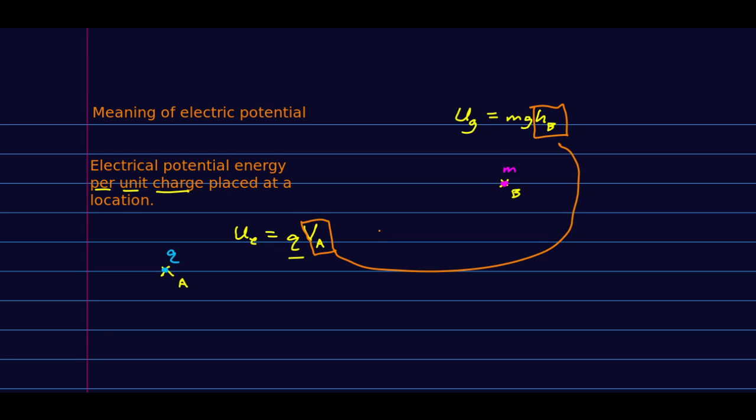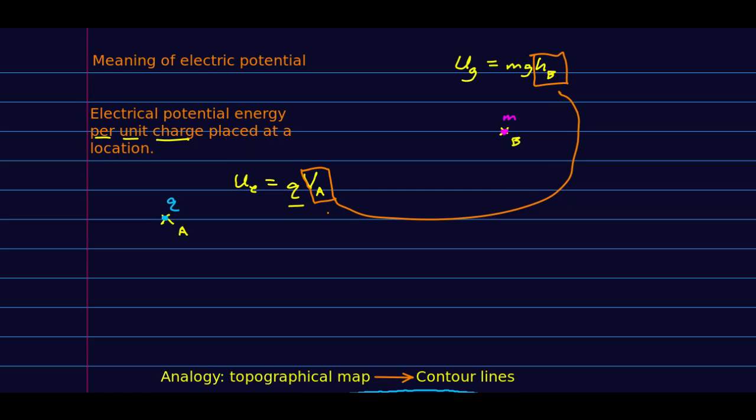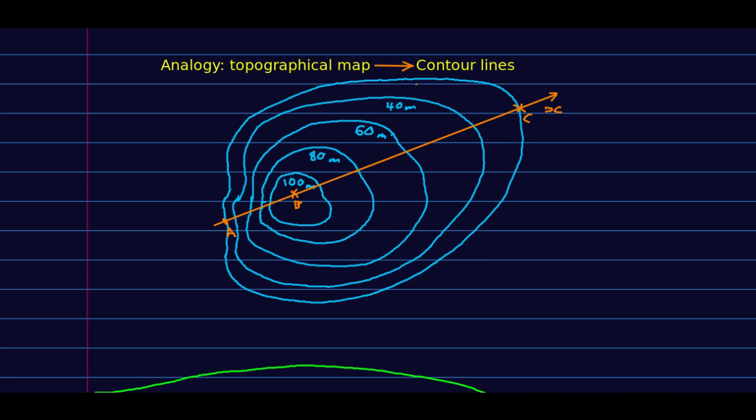That suggests that we can draw some pictures that are similar. We draw pictures of heights the way we do on a topographical map. So here are contour lines like you might see on a topographical map. So everywhere on this line, the height of the land is 100 meters, here's the 80 meter line, and so on.